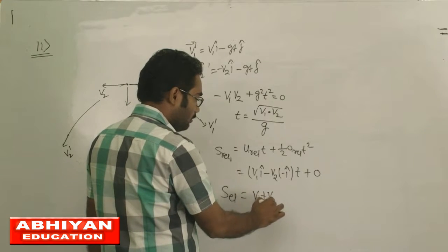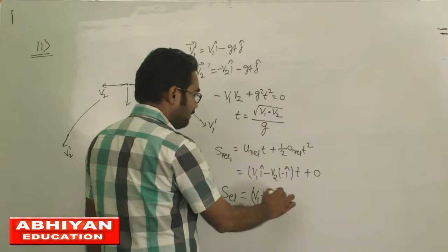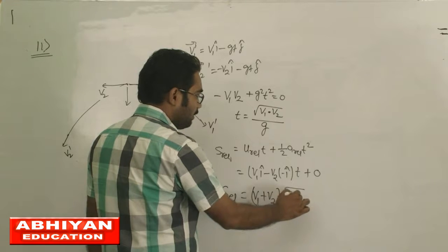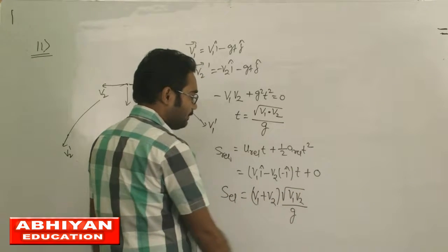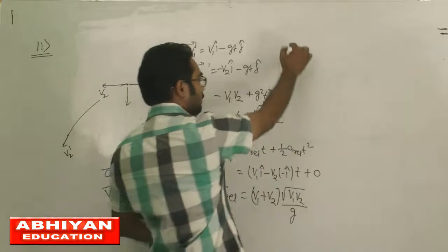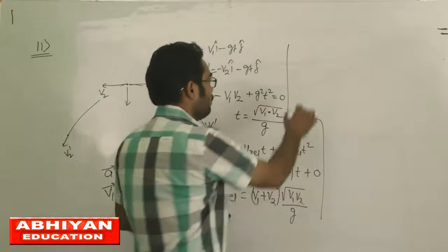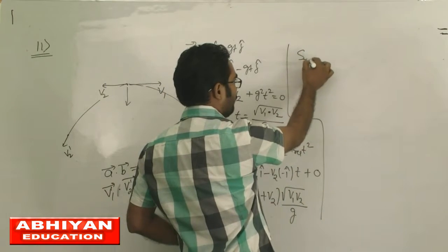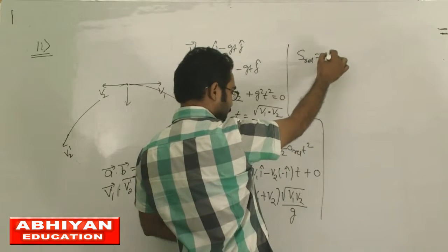V1 plus V2 into time, where time is root under V1 V2 by g. This is the distance. This is what we have to calculate. S relative.